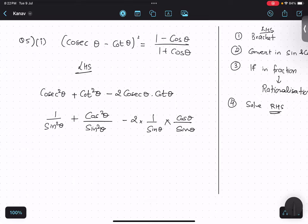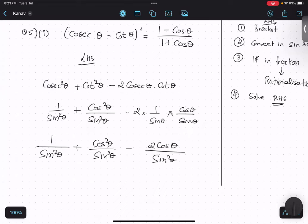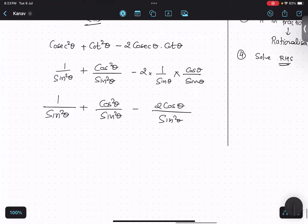Is there anything cancelling? No. So we will just simplify this part. 1 upon sin² θ plus cos² θ upon sin² θ minus 2 cos θ upon sin² θ. Now if you look at the denominator, it is already sin² θ everywhere. So we will take LCM sin² θ. 1 plus cos² θ minus 2 cos θ.